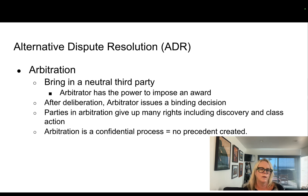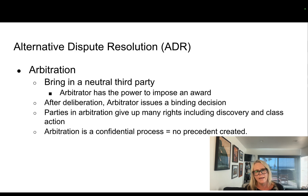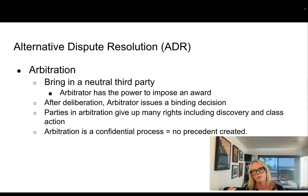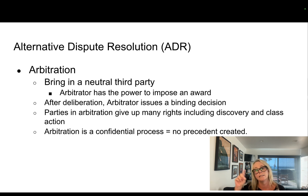Arbitration is another form of alternative dispute resolution. It also has a neutral third party — an arbitrator — but that arbitrator has the power to impose a binding award. Many consumer disputes, when you sign those terms of agreement, you are giving up your right to go to court and signing on to arbitration. The arbitrator listens to both sides and issues a legally binding decision. When you go into arbitration, you're giving up a lot of your rights: there's no discovery process, you can't start a class action lawsuit, and arbitration is confidential, so it doesn't create any precedent.